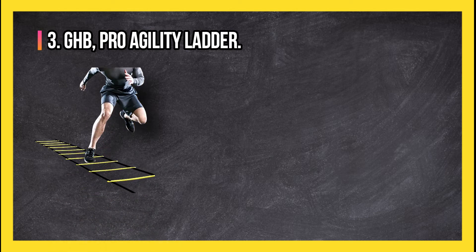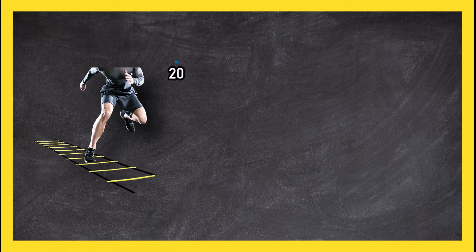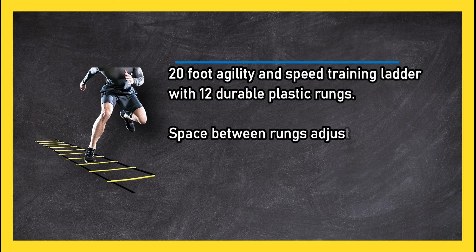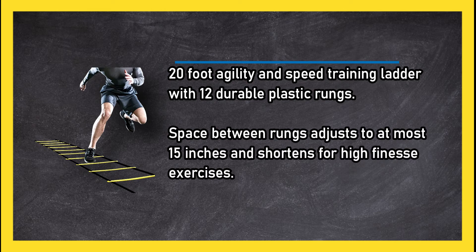At number 3, GHB Pro Agility Ladder. 20 foot agility and speed training ladder with 12 durable plastic rungs. Space between rungs adjusts to at most 15 inches and shortens for high finesse exercises.